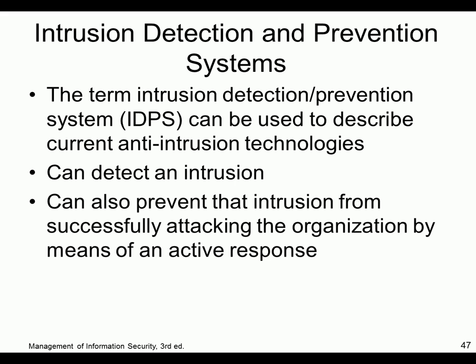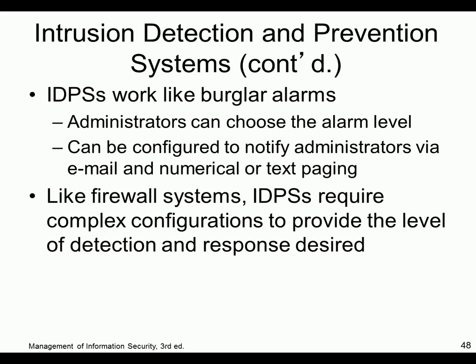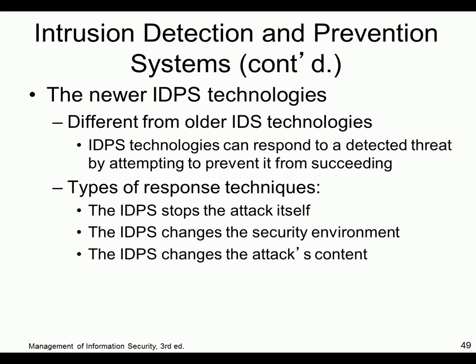IDS — intrusion detection systems — include Snort, which is the most popular, and OSSEC. They can detect and prevent issues. They should alert you — send a text or some notification. They're complex to configure, but once running they're nice. Snort is free. The newer ones can actually respond to detected threats by attempting to prevent them from succeeding — they can stop the attack, change the security environment, or change what the attacker is getting.